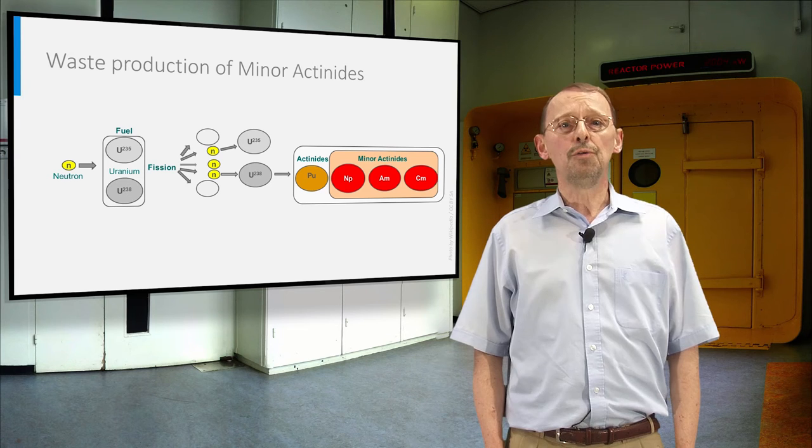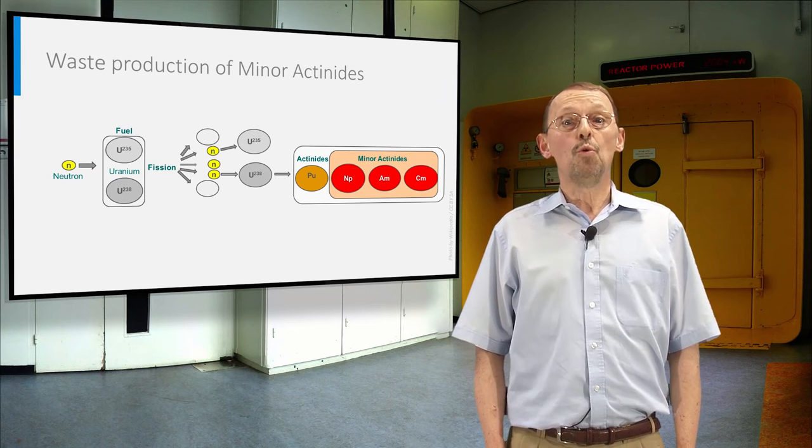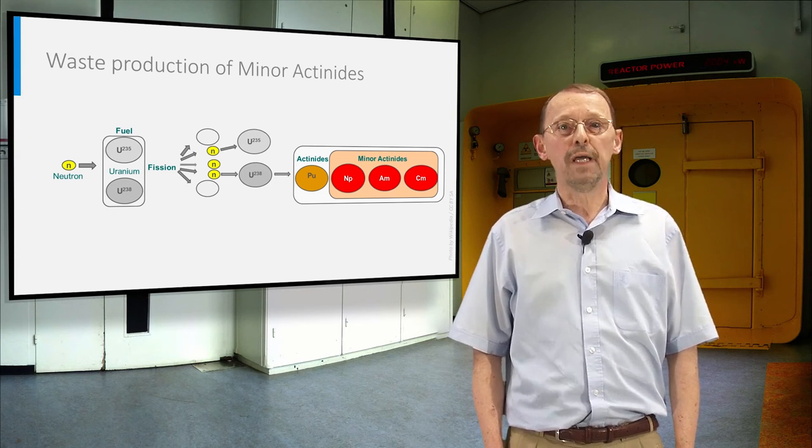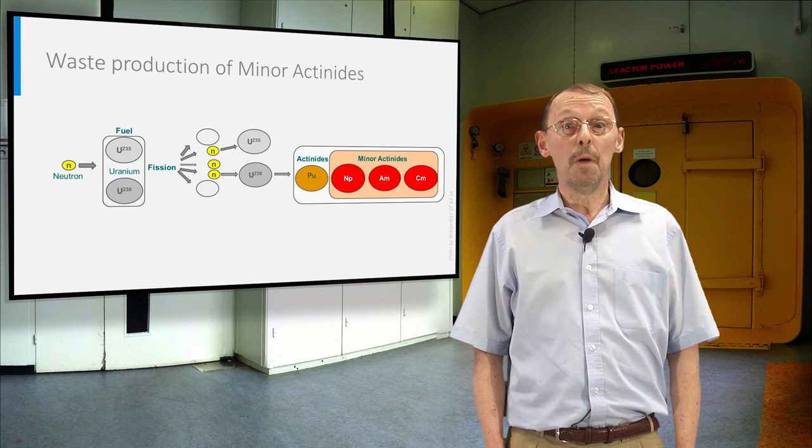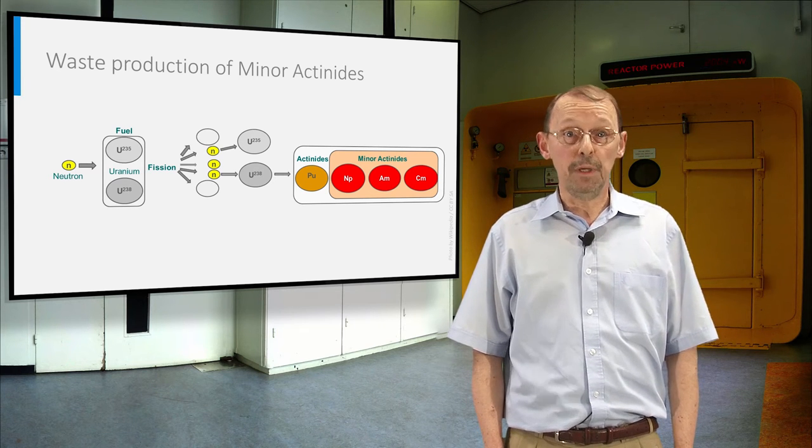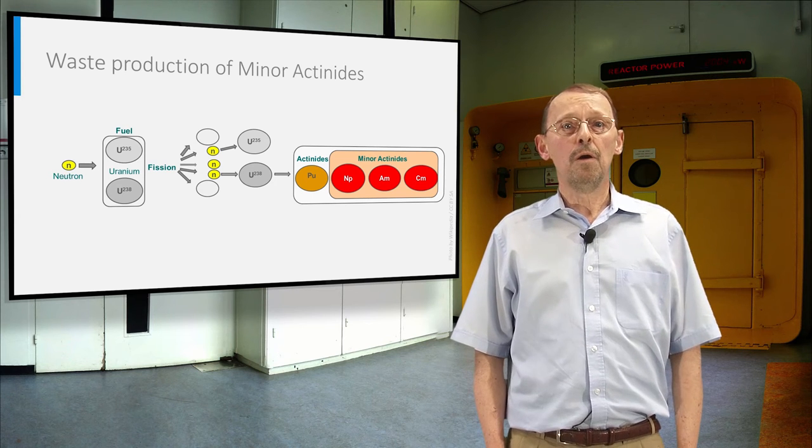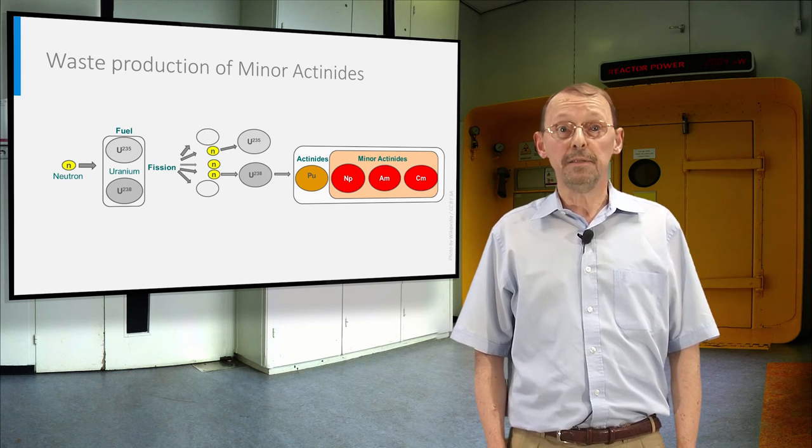This is not the case for the present generation of nuclear reactors, and even the new reactors being built today. So what should we do with all existing waste, called minor actinides, namely neptunium, americium, and curium, which are high-level and heat-emitting?